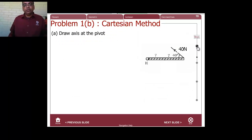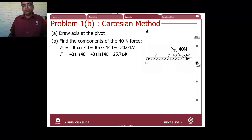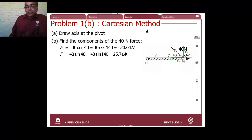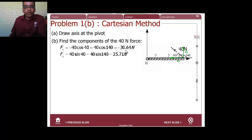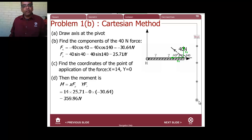Draw the axis through the pivot. Remember the key rule: measure all angles from the positive x-axis. So measure this angle as 140 degrees rather than 40 degrees — that way you don't have to worry about signs separately. Fx = 40·cos(140°) ≈ −30.64 N, Fy = 40·sin(140°) ≈ 25.71 N. Then apply the formula to get the moment.